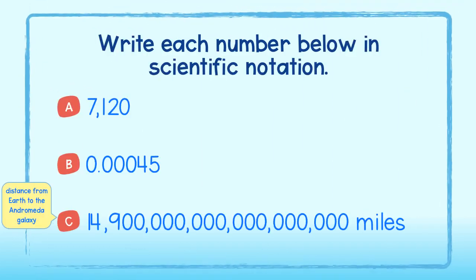All right, your turn. Write each number below in scientific notation. For part a, we must move the decimal point to the left 1, 2, 3 times. So we write this as 7.12 times 10 to the third power.